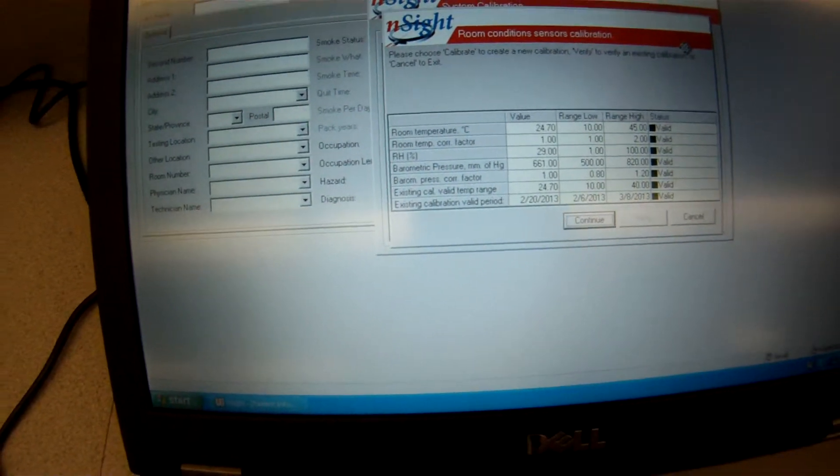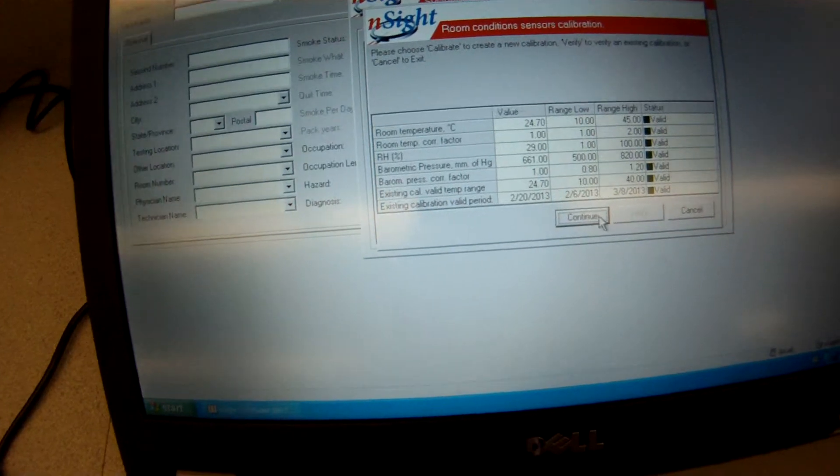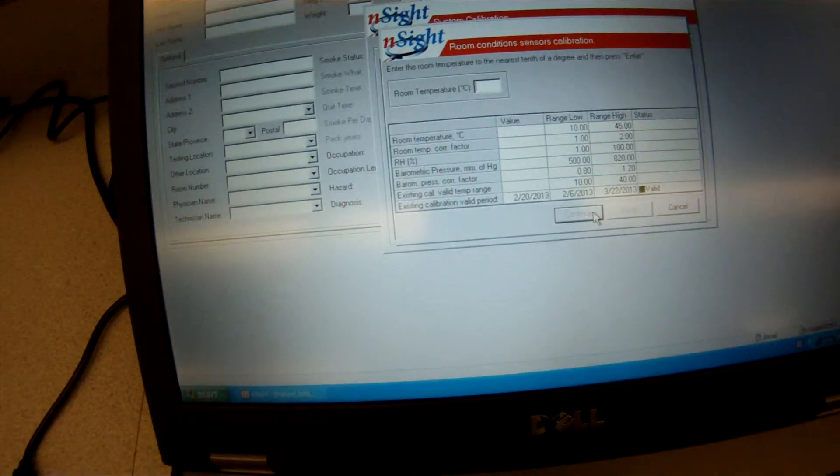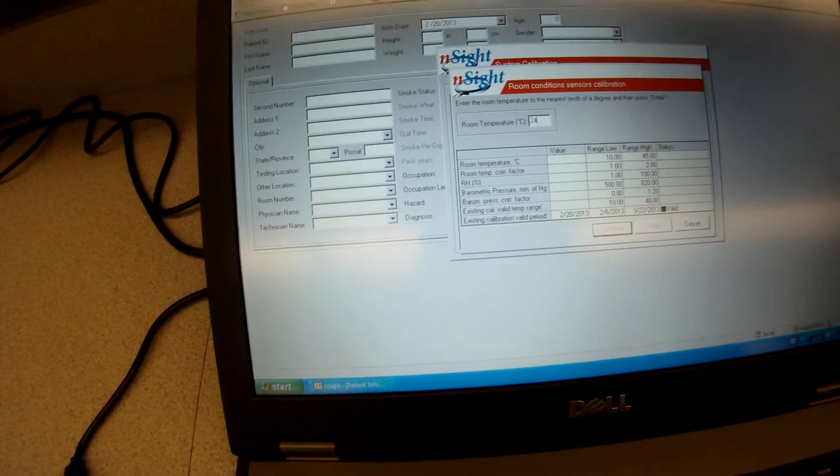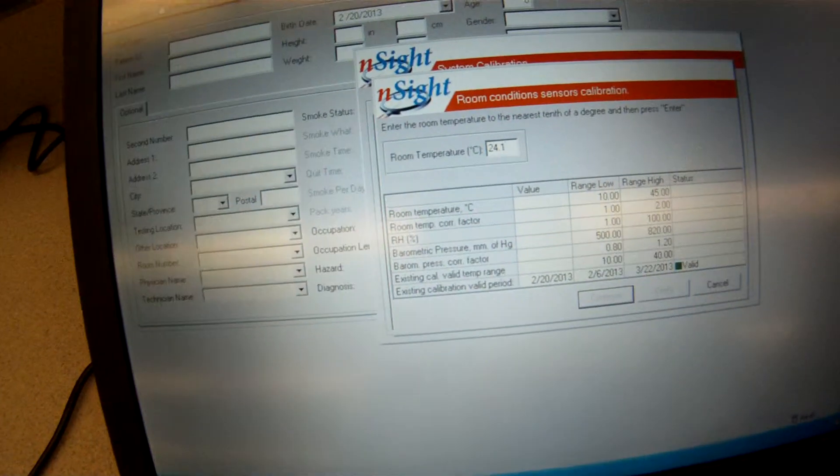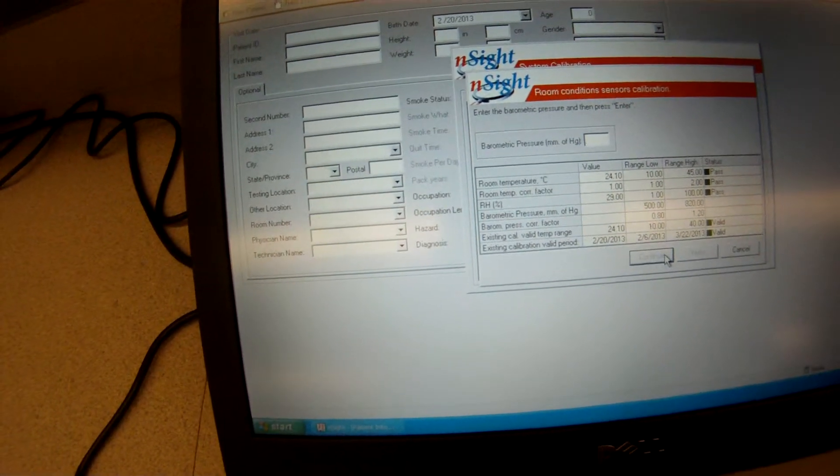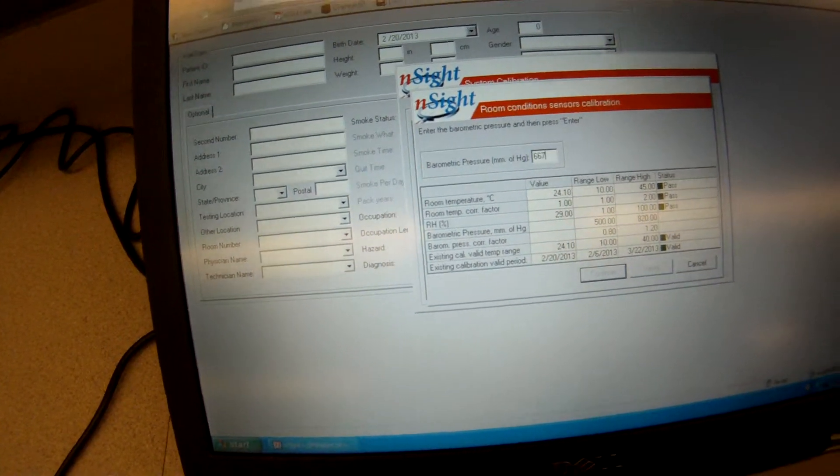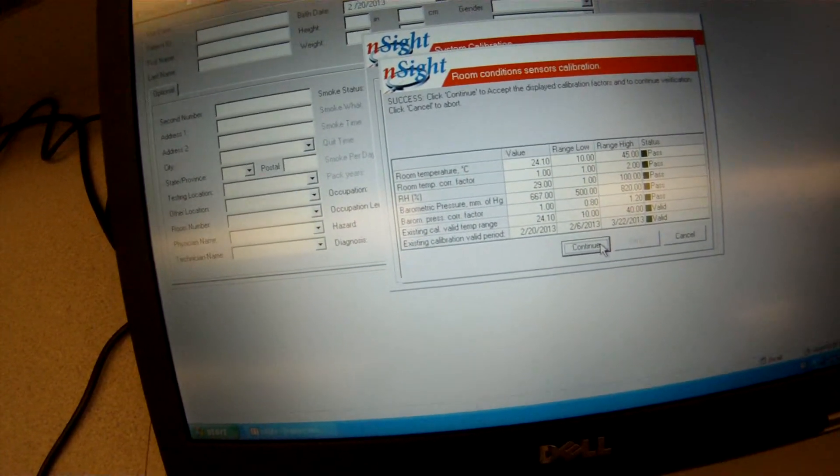It comes back now and asks us what is that. So we're going to go continue and we actually put in the temperature. The temperature today is 24.1 in this room right now. It's pretty warm in here. The humidity is 29 and the barometric pressure today is 667. So we enter that and then we go continue.